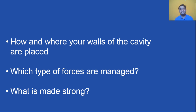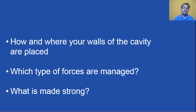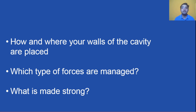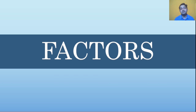What is the resistance form? Basically, it tells you how you place your walls and where you place those walls, and which type of force you have to manage based on the primary resistance form — what is getting affected because of these features, and basically whether you are making the tooth strong or whether you are making the restoration strong.